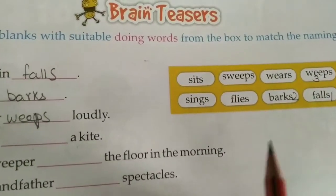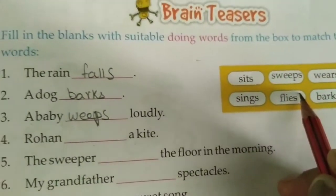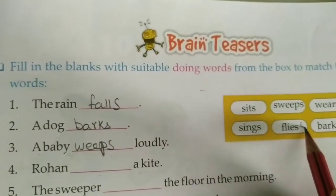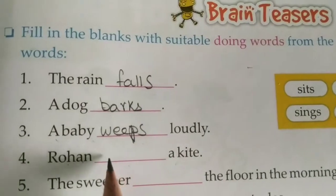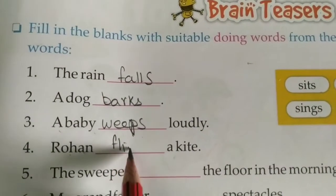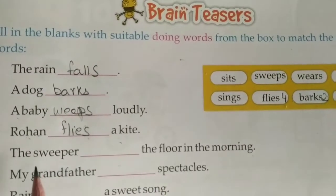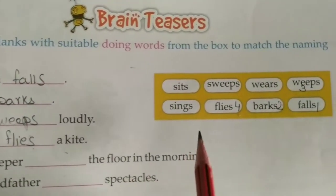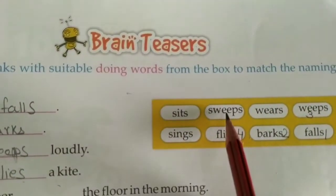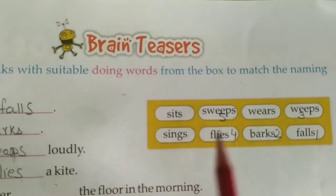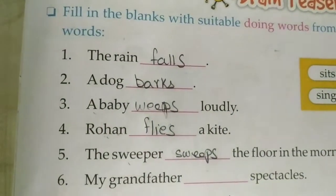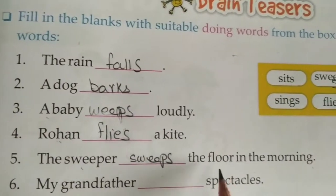Number four: Rohan dashed a kite. Which word? Rohan flies a kite. Number four: Rohan flies a kite. Number five: the sweeper dashed the floor in the morning. So what is the action of the sweeper? The sweeper sweeps. Number five: the sweeper sweeps the floor in the morning.